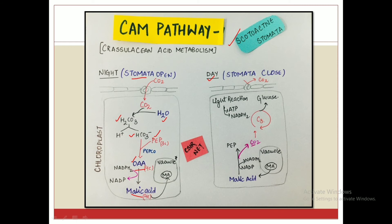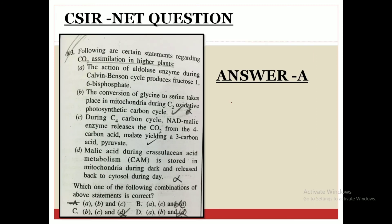Oxaloacetic acid gets converted into malic acid. The key difference at this step is that the malic acid produced at night gets stored in the vacuole — this is very important to remember. During the daytime, when the stomata are closed, malic acid comes out of the vacuole and gets converted into PEP. Carbon dioxide is released, enters the C3 cycle to form glucose, and the ATP and NADPH₂ needed for the C3 cycle are produced via the light reactions.